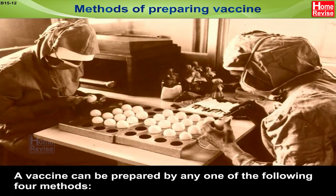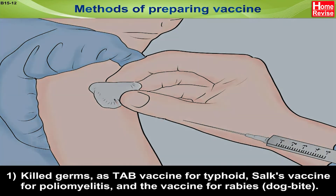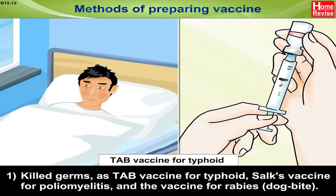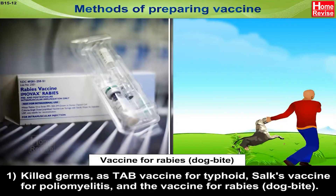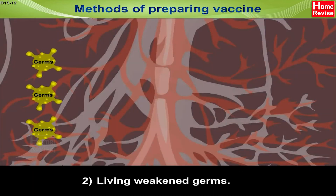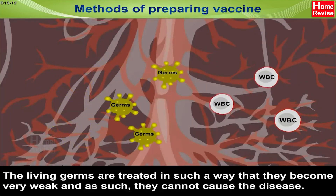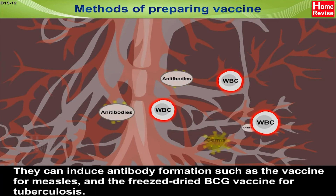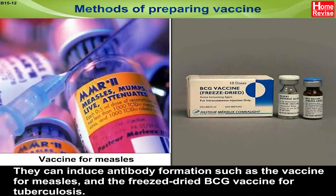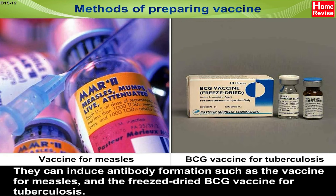Methods of preparing a vaccine: a vaccine can be prepared by any one of the following four methods. Number one — killed germs: as in the TAB vaccine for typhoid, the Salk vaccine for poliomyelitis, and the vaccine for rabies (dog bite). Number two — living weakened germs: the living germs are treated in such a way that they become very weak and cannot cause the disease, but they can induce antibody formation — such as the vaccine for measles and the freeze-dried BCG vaccine for tuberculosis.